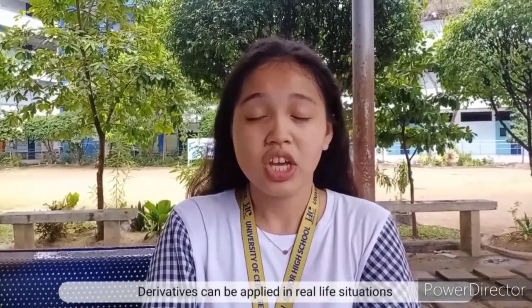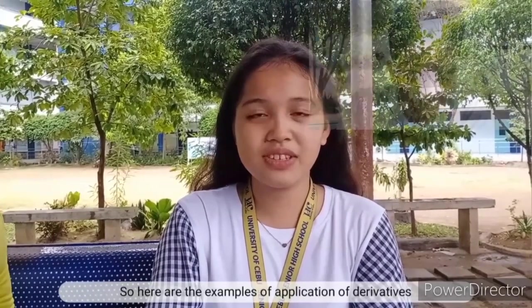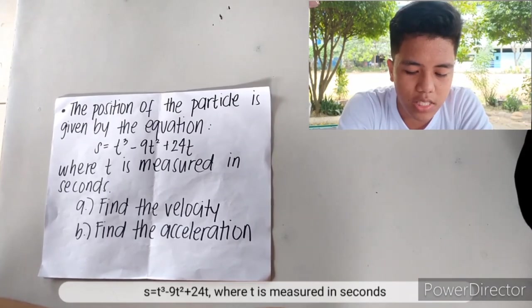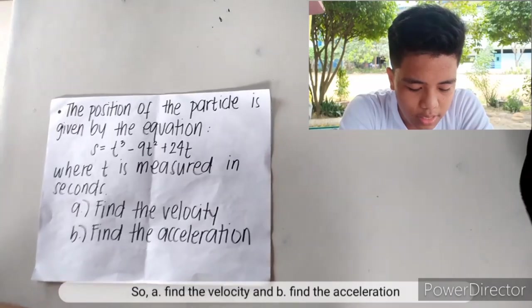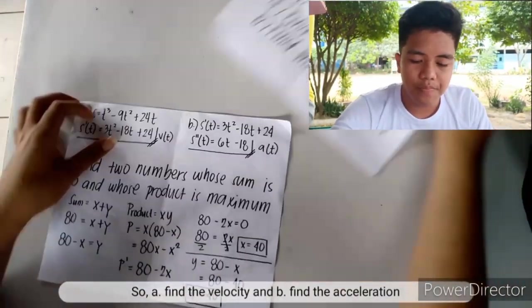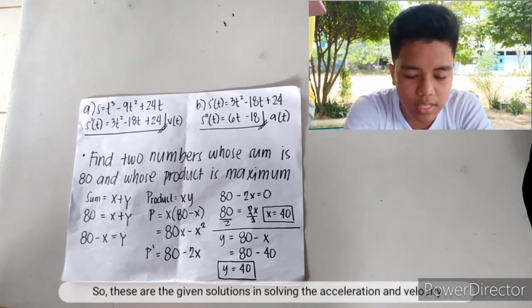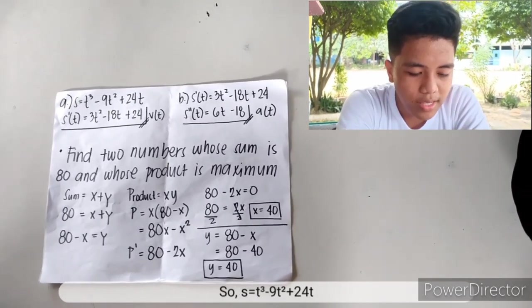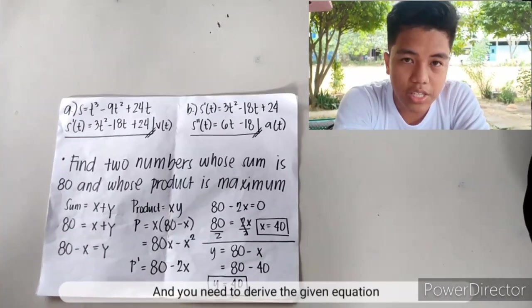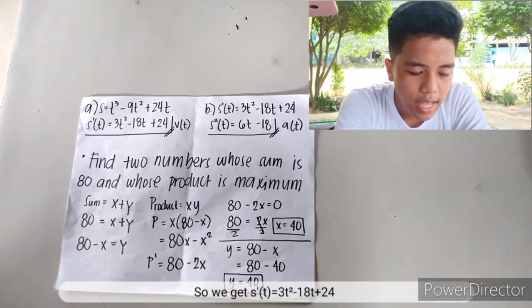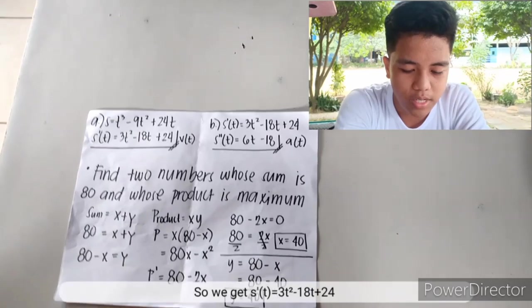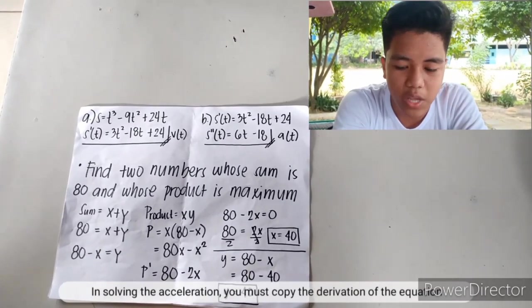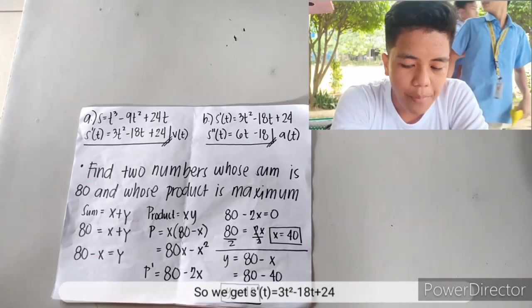Derivatives can be applied in real-life situations. Example: the position of a particle is given by s equals t cubed minus 9t squared plus 2t, where t is in seconds. To find velocity, derive s: s prime(t) equals 3t squared minus 18t plus 2. To find acceleration, derive velocity again: s double prime(t) equals 6t minus 18.